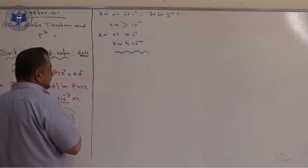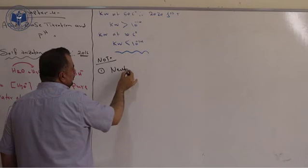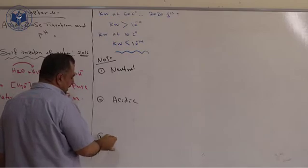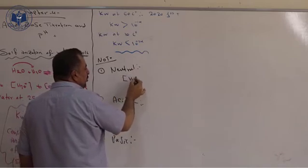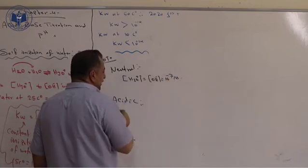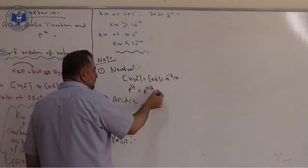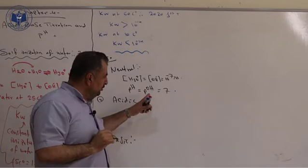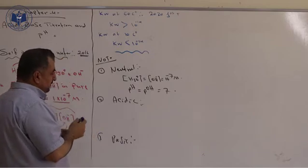We have three types of solutions in chemistry. First, we have neutral solution; second, acidic; and third, basic. For neutral solutions, concentration of hydronium always equals concentration of hydroxide, which is 10 to the power negative 7 molarity. pH equals pOH equals 7, and the concentration equals 10 to the power negative 7.